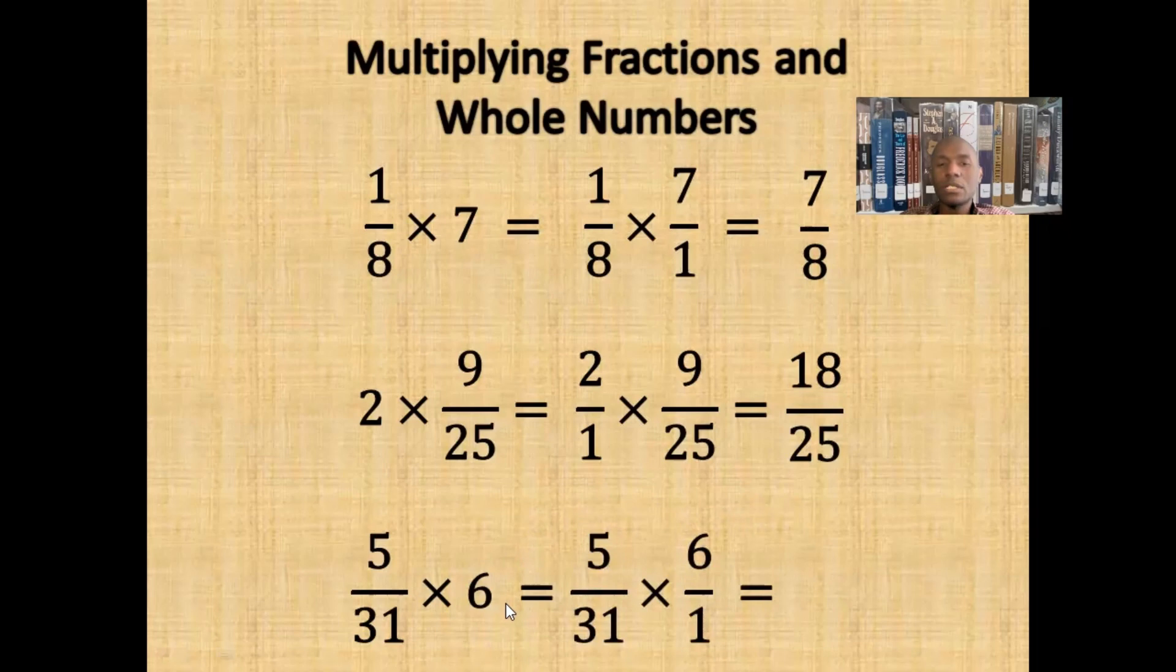If we turn 6 into a fraction, it becomes 6 over 1. Thus, we are multiplying 5/31 times 6 wholes. If we multiply the numerators together and the denominators together, we get 30/31.